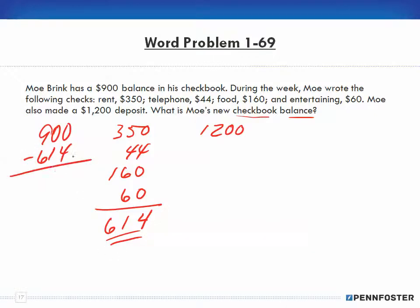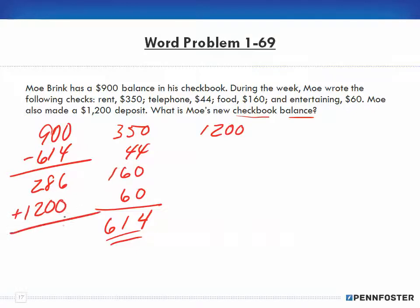Subtracting $614 from $900 gives $286 remaining balance. Then adding back in the $1,200 deposit: $286 + $1,200 = $1,486. So $1,486 is the final balance in Mo's account.